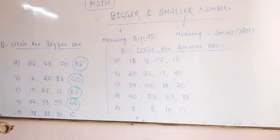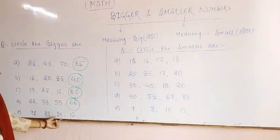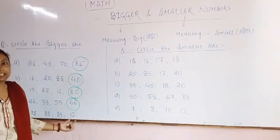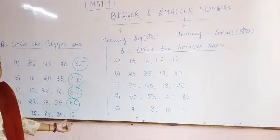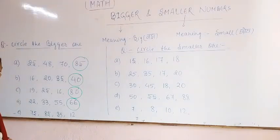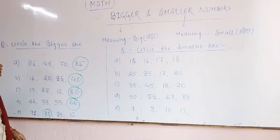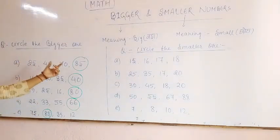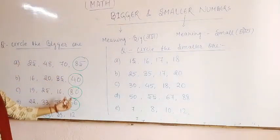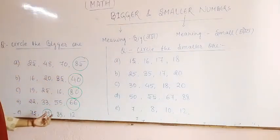The last question: 75, 85, 45, and 12. Which one is the bigger one? 85 is the bigger one. So the bigger ones from all questions are: 85, 40, 25, 66, and 85.